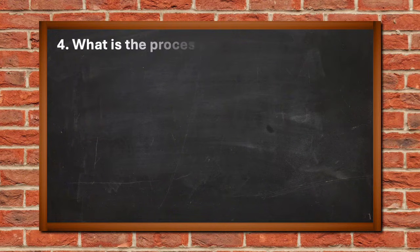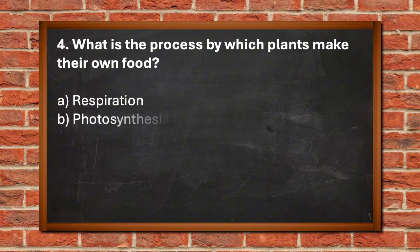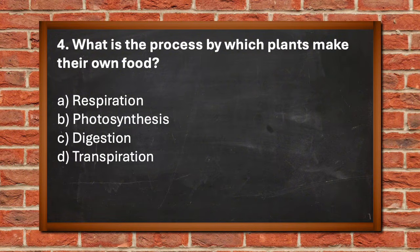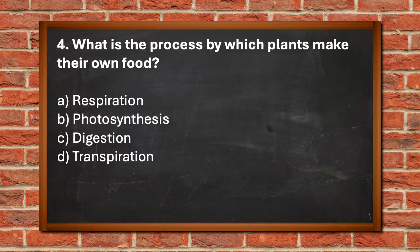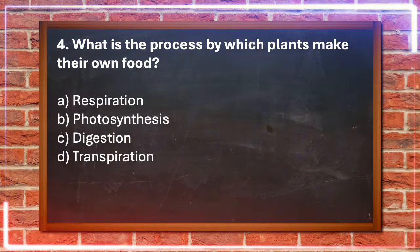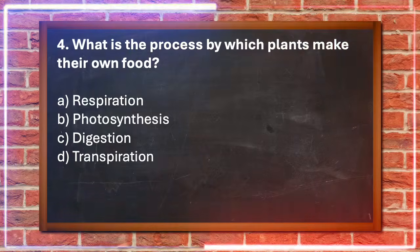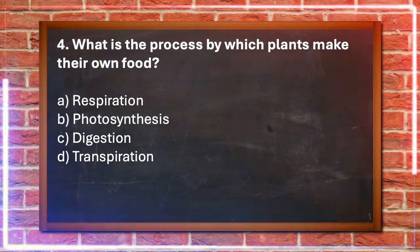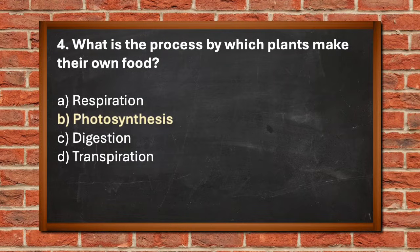Number 4. What is the process by which plants make their own food? A. Respiration, B. Photosynthesis, C. Digestion, D. Transpiration. The answer is B. Photosynthesis.